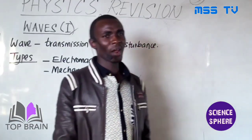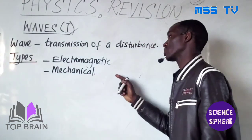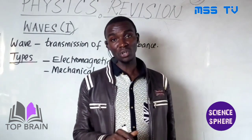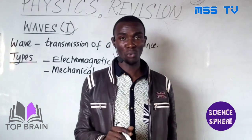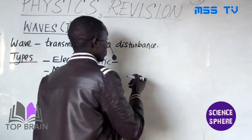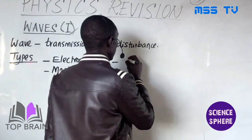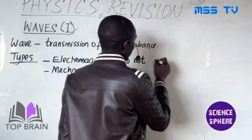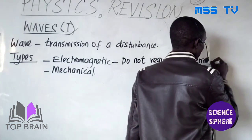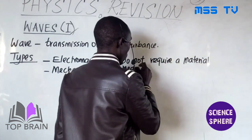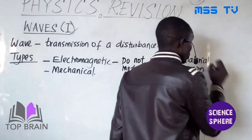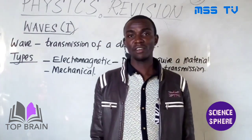What are electromagnetic waves and what are mechanical waves? Electromagnetic waves are waves that do not require a material medium for transmission. A wave can either require a material medium to move, or it can move in what is called a vacuum. So electromagnetic waves do not require a material medium for transmission — in short, electromagnetic waves can travel in vacuum.